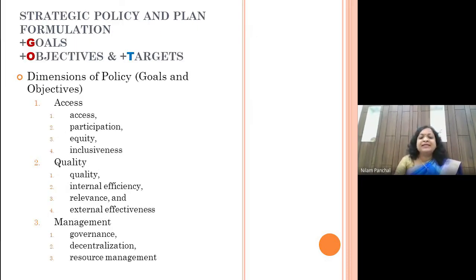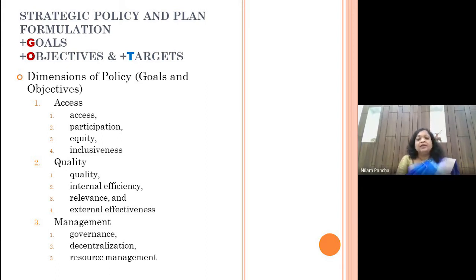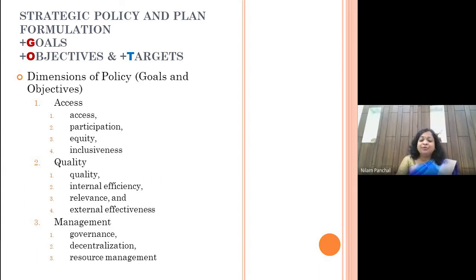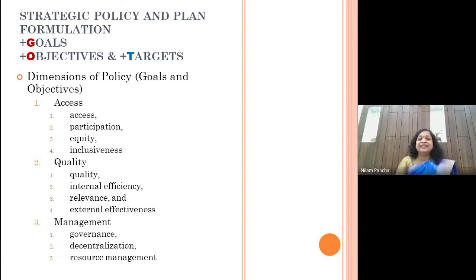The next is preparing the dimension of the policy. When we see dimensions here, it focuses on three things: goals, objectives and targets. Three things are important in the education sector. One is access — meaning whether it is accessible to people, whether people would be able to participate, whether it would be equally available to all, and whether there would be inclusiveness.